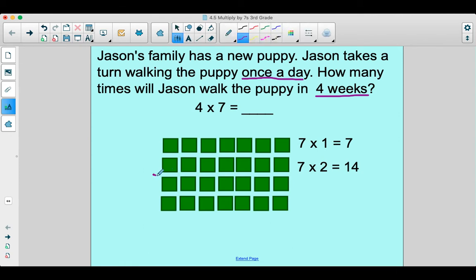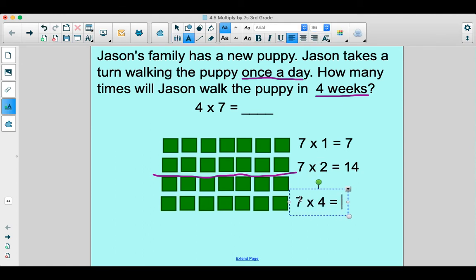28, right? So you could think about it like this, using a fact that you know, 7 × 2 is 14. So 7 × 4 is 28. It's just twice as much, right?